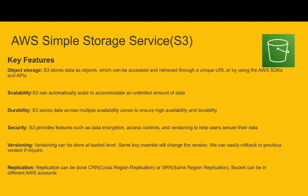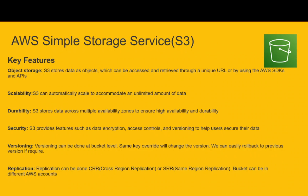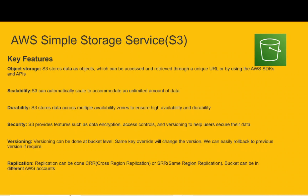Versioning can be done at the bucket level. If the same key is overridden, it will change the version. For example, if a file already exists and you copy the same file there, the key associated with that file would be overwritten. You can also easily roll back to a previous version if required.